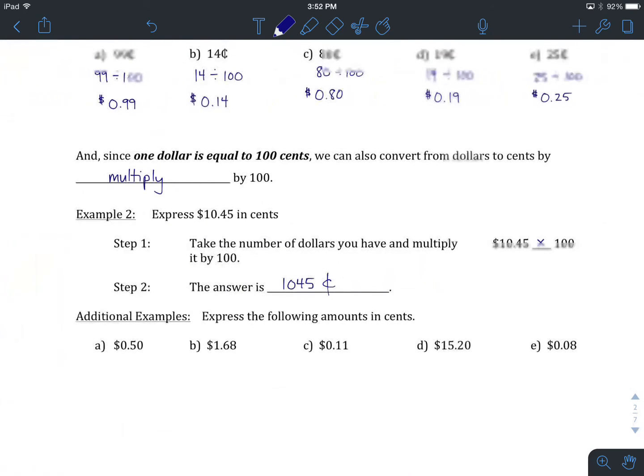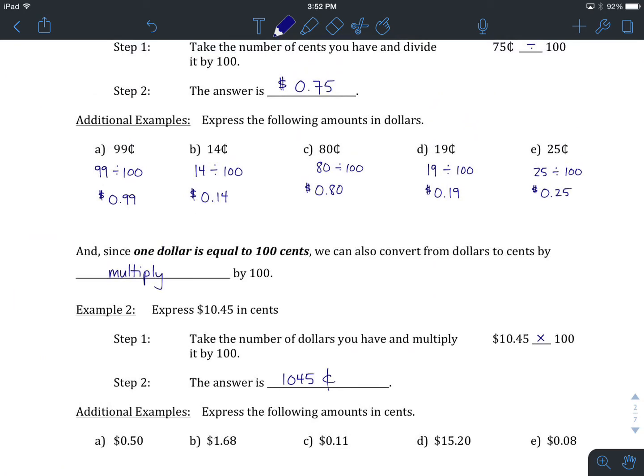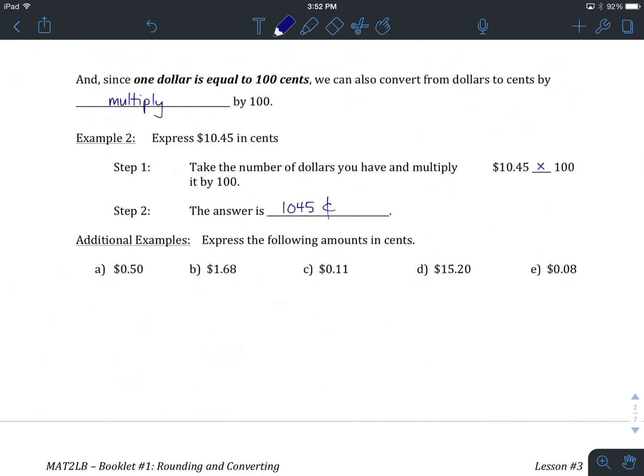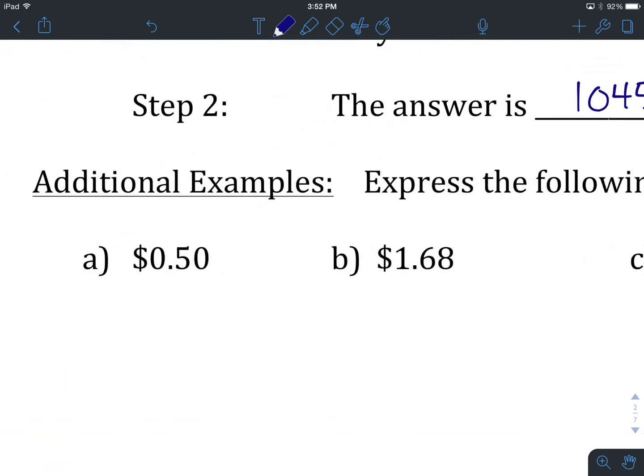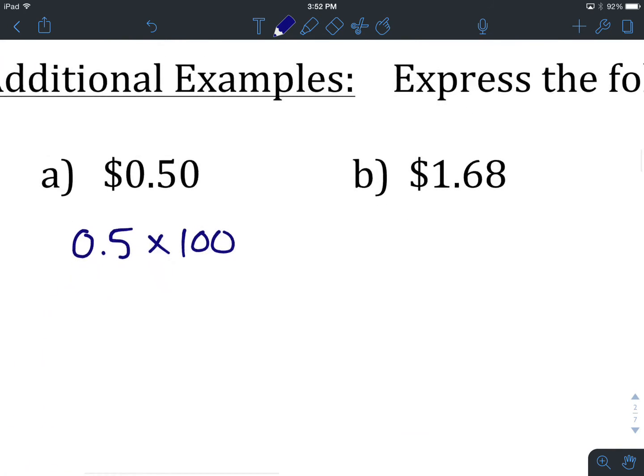A little difference here between these notations: you'll notice that when we're expressing things in dollars, we put the dollar sign out front. When we're expressing things in cents, the cents comes after the numbers that we've been working with.